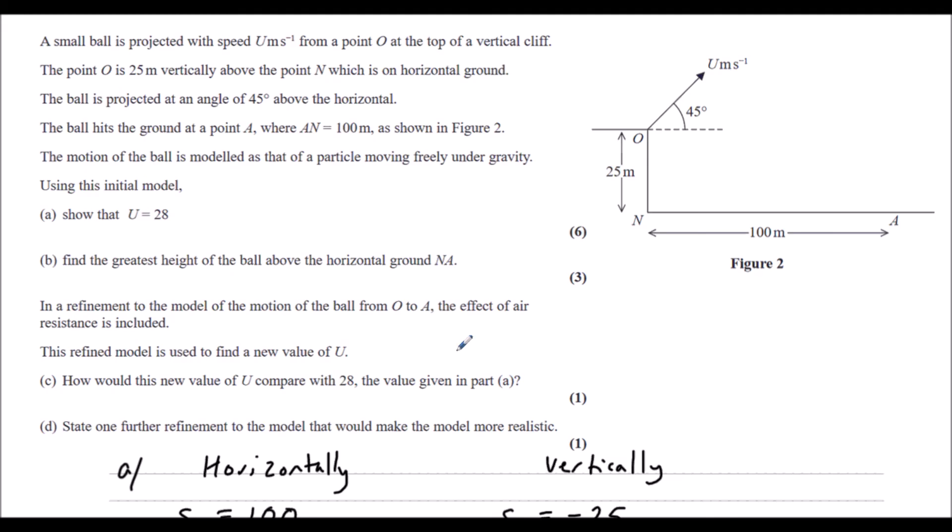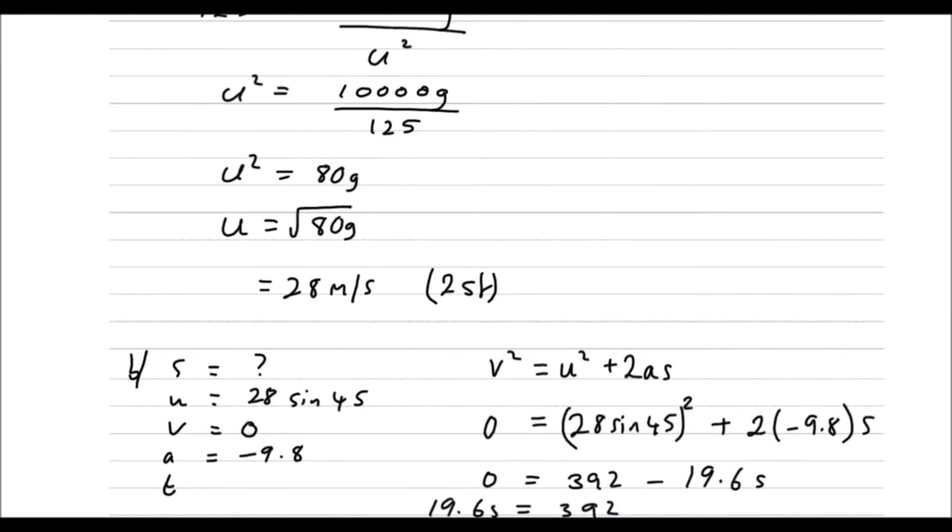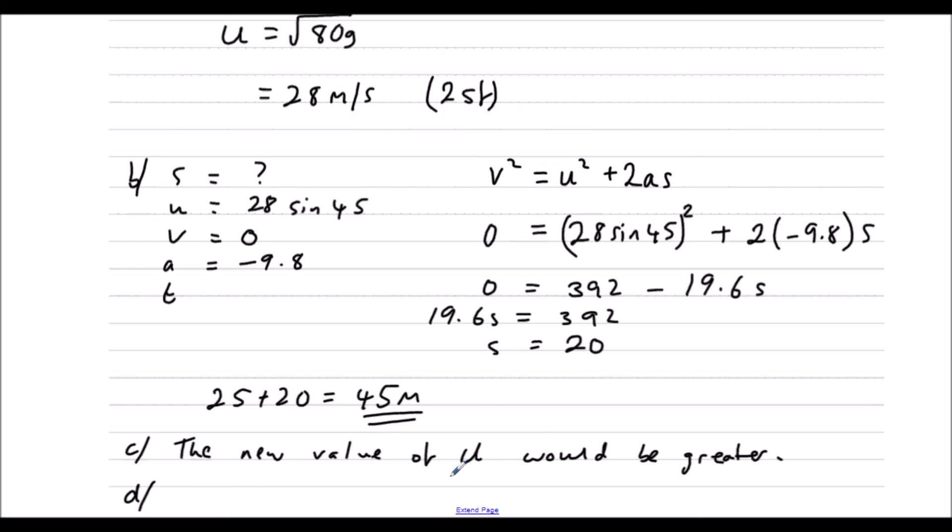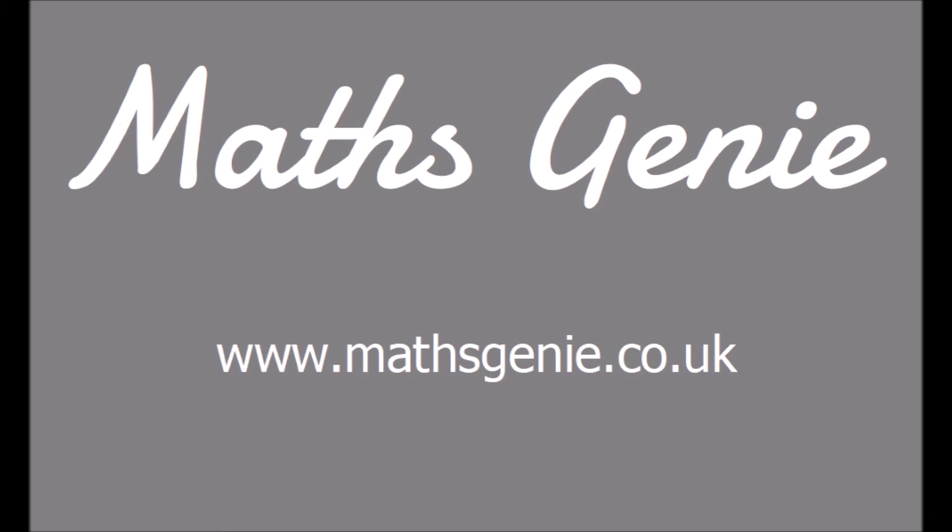Part D, state one further refinement of the model that would make the model more realistic. So what modeling assumptions were used in the model that we can say we would get rid of? So the ball is modeled as a particle. So we could say we would not model it as a particle. The ball could not be modeled as a particle.